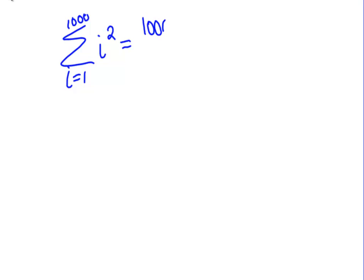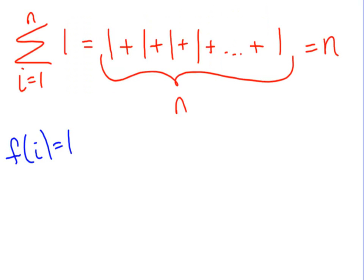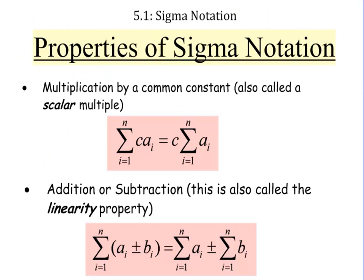So n times n plus 1 times 2n plus 1, so that'd be 2,001, all over 6. So whatever that number is, that's the answer. That's all well and good if we just happen to be adding up those four things. But usually, our area equation, that's what we're going to be adding up, is all these area equations. They're more than just i squared. So we need some more simplification rules.